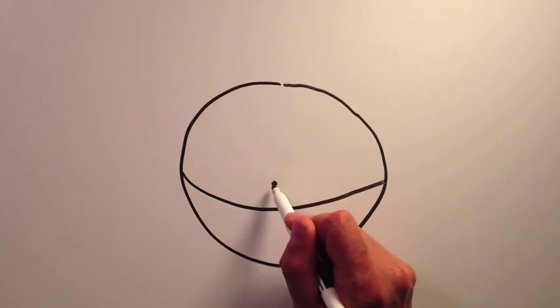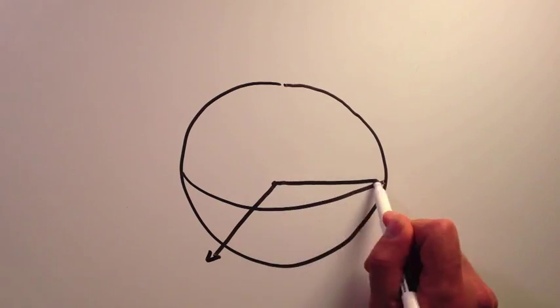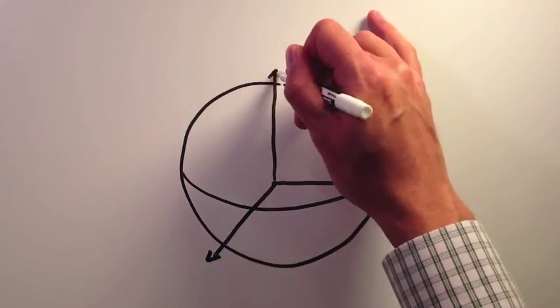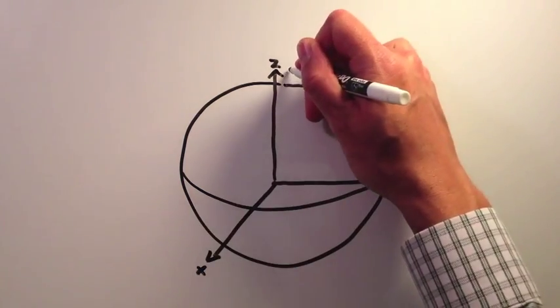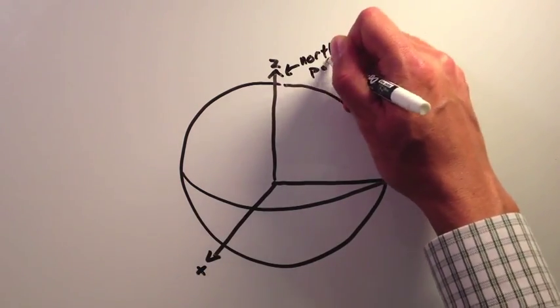When describing the Cartesian elements for a satellite, you will need to expand it out into three dimensions. The axes are typically placed at the center of the Earth, with the z-axis, the new dimension, pointing to the north pole.